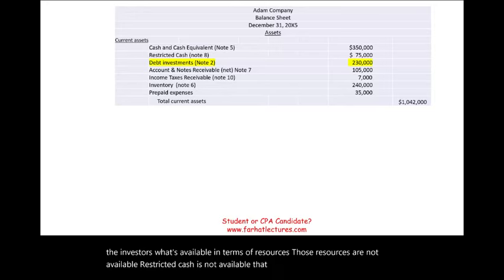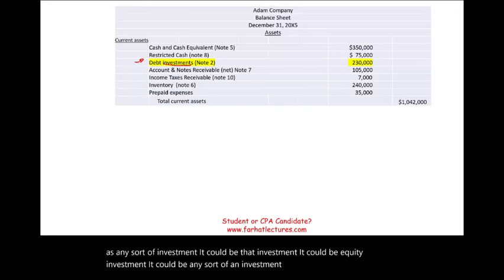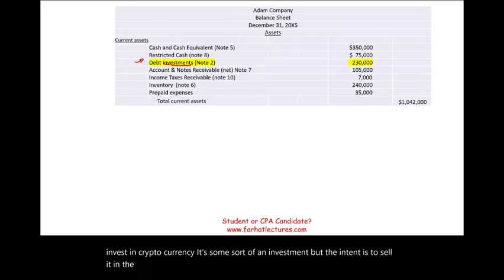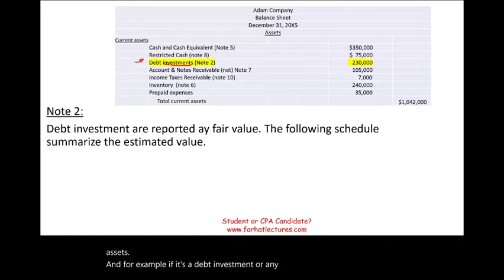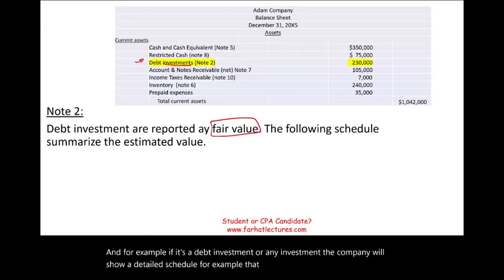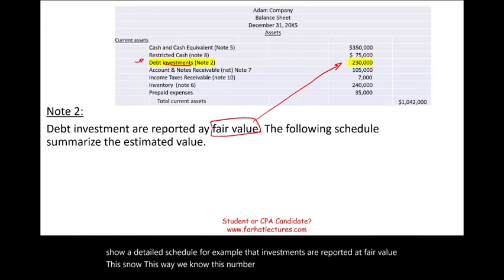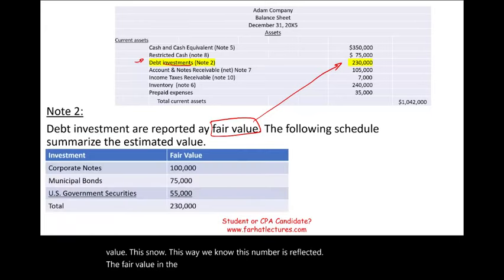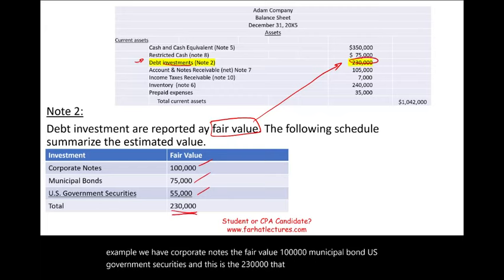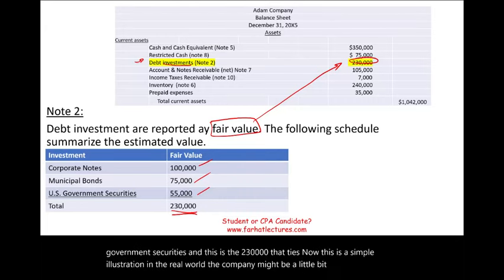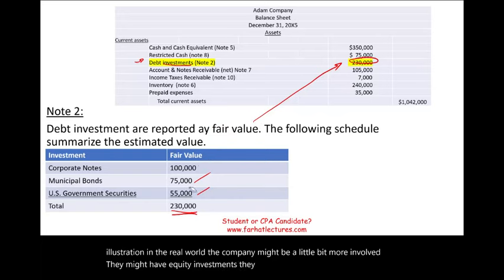Debt investments — this could be any sort of investment: debt investment, equity investment, gold, cryptocurrency. It's some sort of investment where the intent is to sell it in the near future, within the next 12 months, so it's listed under current assets. Debt investments are reported at fair value. For example, a schedule might summarize the estimated fair value: corporate notes at $100,000, municipal bonds, US government securities, totaling $230,000. In the real world the company might also have equity investments and must reconcile everything.